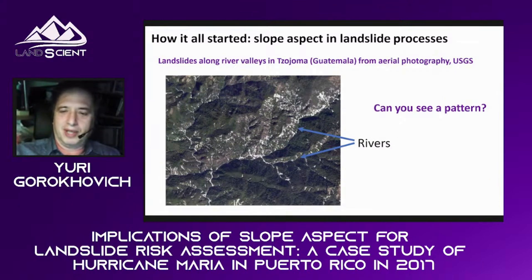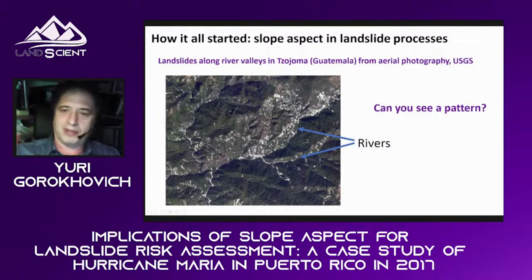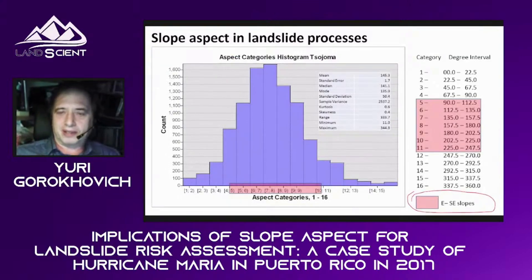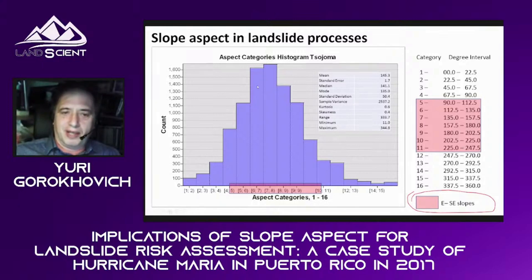Our observation and hypothesis was that there should be some kind of meteorological or climatological pattern that produces landslides on one side, because the rocks are pretty much the same everywhere — it's weathered regolith, basically. So there should be other factors beyond geology. We used GIS, created an elevation model, slope, and aspect, and produced a histogram. The histogram of aspect distribution showed a peak at categories 7 and 8 — the eastern and south-eastern slope directions. So the majority of landslides in Sohoma are occurring on south-eastern and eastern slopes.